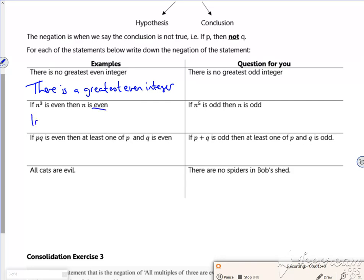So if n cubed is even, then n is not even, so you've got another one there you can do.